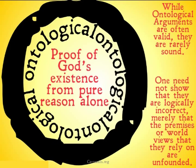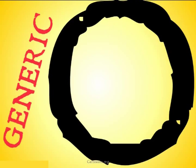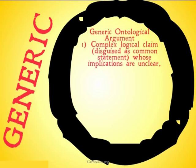In order to get a good understanding of how one would do this, we're going to take a look at a generic ontological argument that encompasses some of the main problems of a lot of the ontological arguments that exist. They often begin with a complex logical claim that's disguised as a common statement, whose implications are going to be unclear — where it seems like something we would generally accept, but it's in fact a much more complicated logical point, and it's not clear what the implications of this claim are from the outset.